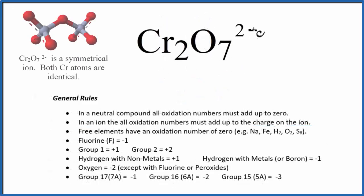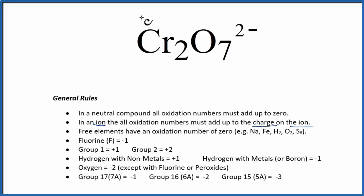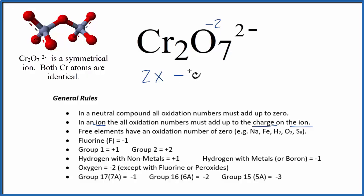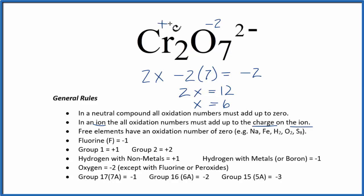Cr2O7²⁻ is one you see quite often. It's an ion with a two minus charge, so all the oxidation numbers add up to the charge on the ion. Cr isn't in our list, but oxygen is minus two. Setting up the equation: 2x for the two chromium atoms minus two times seven oxygen atoms equals minus two. Solving gives 2x equals twelve, and x equals six, so each Cr atom has an oxidation number of plus six.